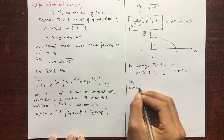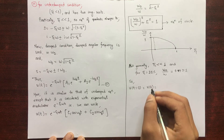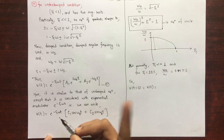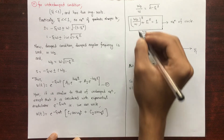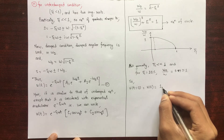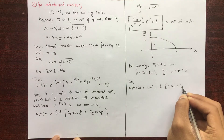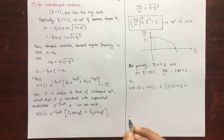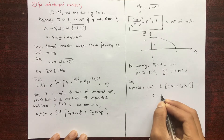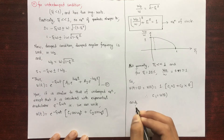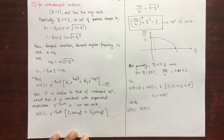Generally the damping ratio in structures is less than 10%. Applying initial conditions: u(t) at t = 0 equals u(0). Substituting t = 0, the exponential term becomes 1, cos(0) = 1, and sin(0) = 0, so C₁·1 + C₂·0 gives us C₁ = u(0).